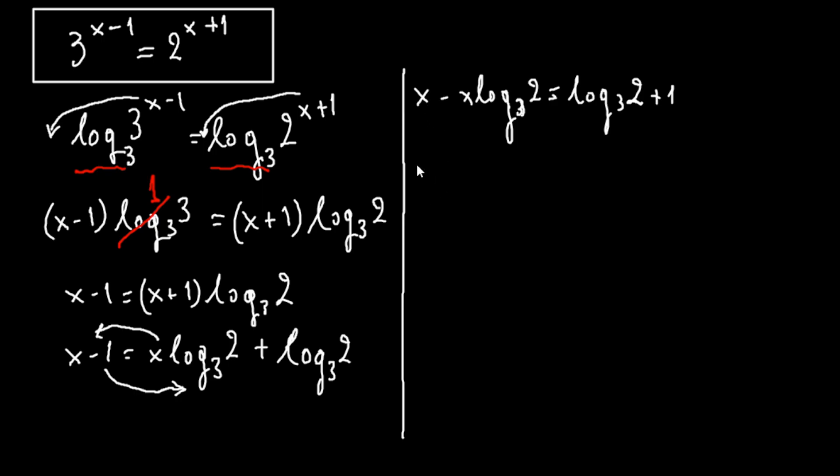Now the common factor x, so we have x times 1 minus log 2 with the base of 3 equals to log 2 with the base of 3 plus 1. So x equals to the fraction of log 2 with the base of 3 plus 1 over 1 minus log 2 with the base of 3 and this equals to 4.419.